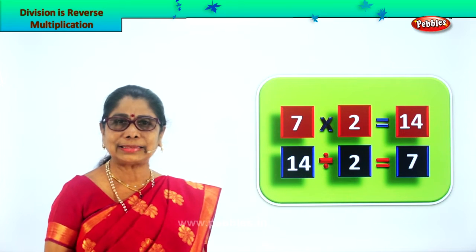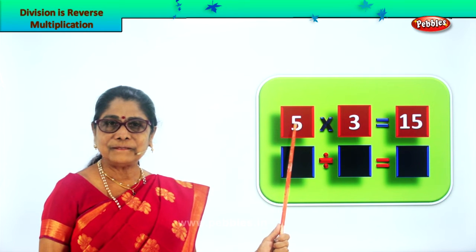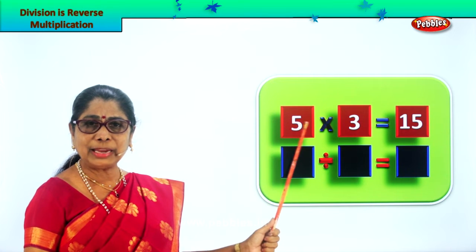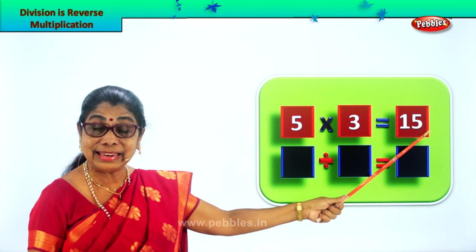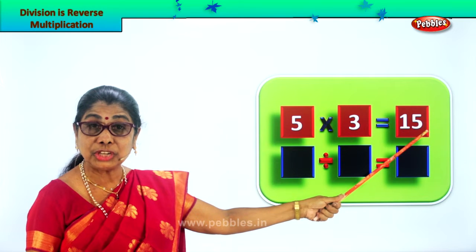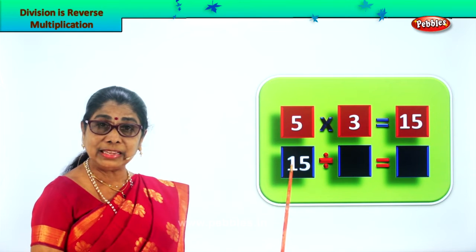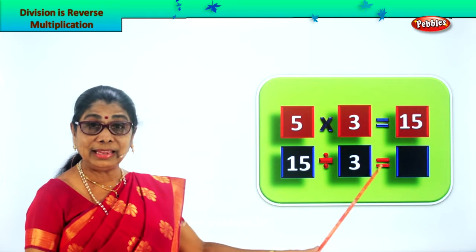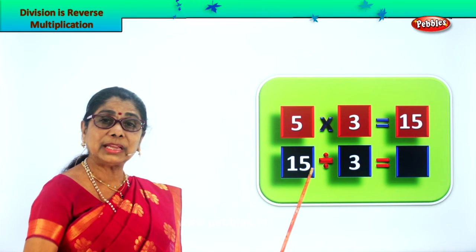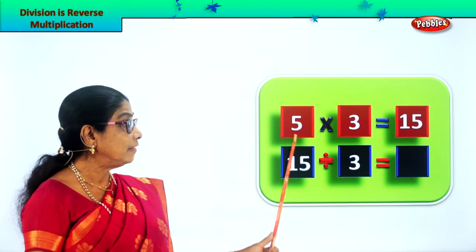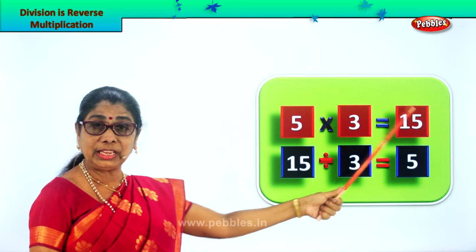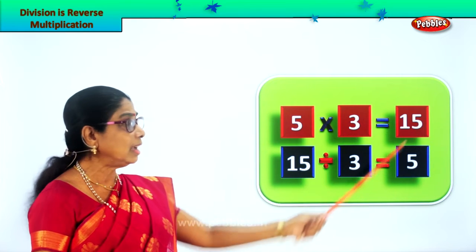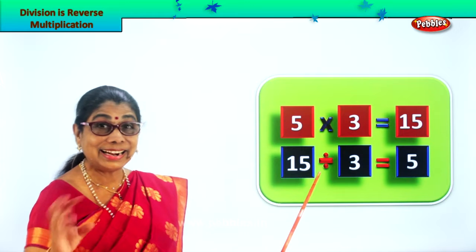Did you enjoy? Let's take another sum. Look. Five into three — five into three. Five threes are equal to 15. Five multiplied by three is equal to 15. Now what are we learning? Division is reverse multiplication. So let's divide 15. We put down 15 here, divided by three. How many times will three go into 15? Five times. Five into three gives you 15. 15 divided by three gives you five. Multiply five into three — five threes are 15.